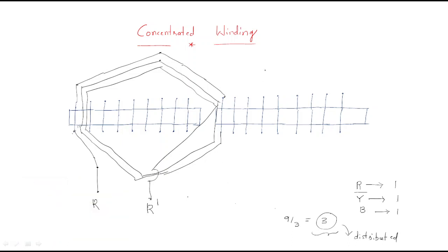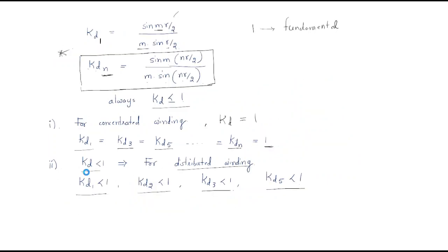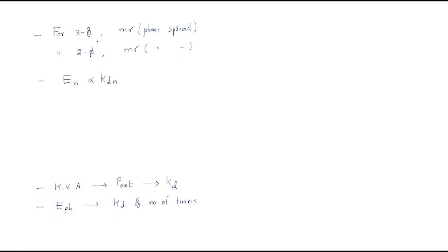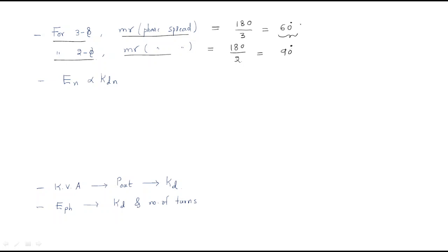Hello everyone. In the last session we discussed about concentrated winding, and we already discussed the importance of the distribution factor. Now we will continue with the distribution factor. In a three-phase winding, the phase spread value for a particular pole is 180 degrees divided by 3, which means 60 degrees. So for one phase we use 60 degrees. For a two-phase system, the phase spread is 180 divided by 2, which gives 90 degrees. So three-phase gives 60 degrees and two-phase gives 90 degrees phase spread.